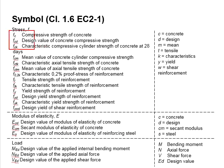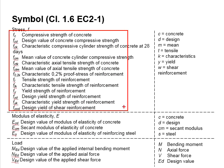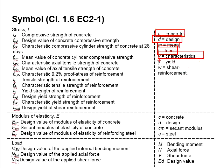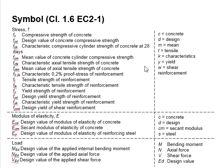Based on the list of symbols here, we can consolidate that C represents concrete, D represents design, M represents mean, T represents tensile, K represents characteristic, Y represents yield, and W represents the shear reinforcement. The stress is represented by F.